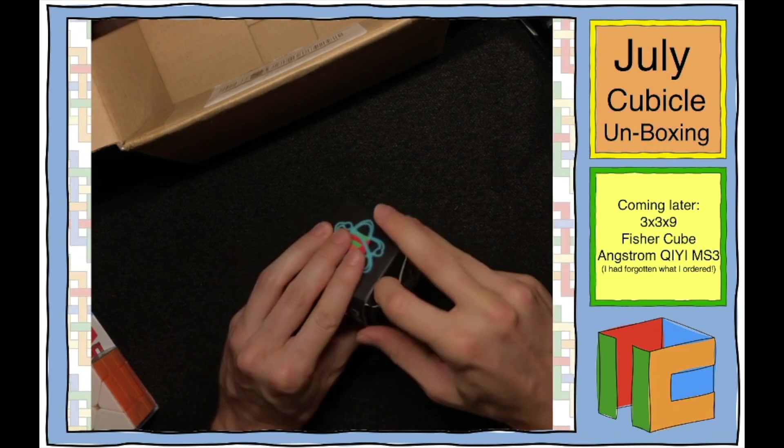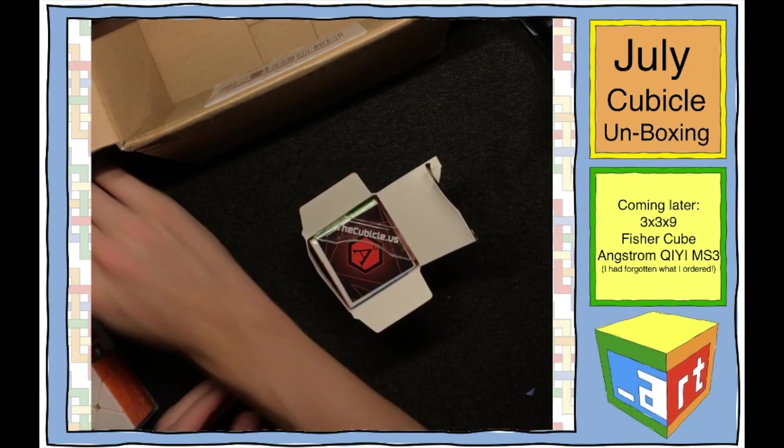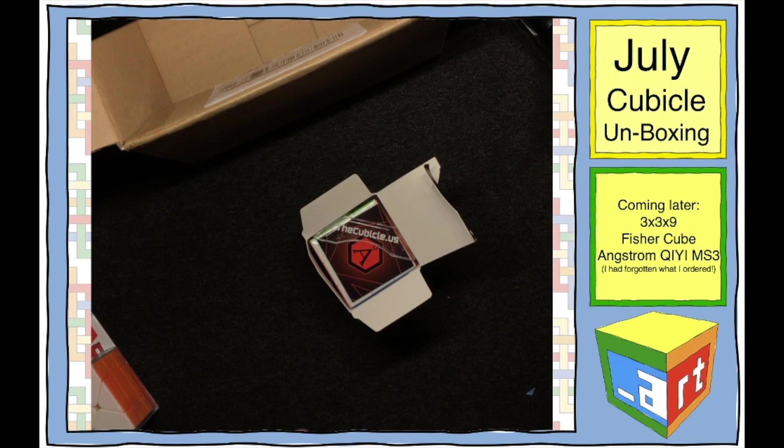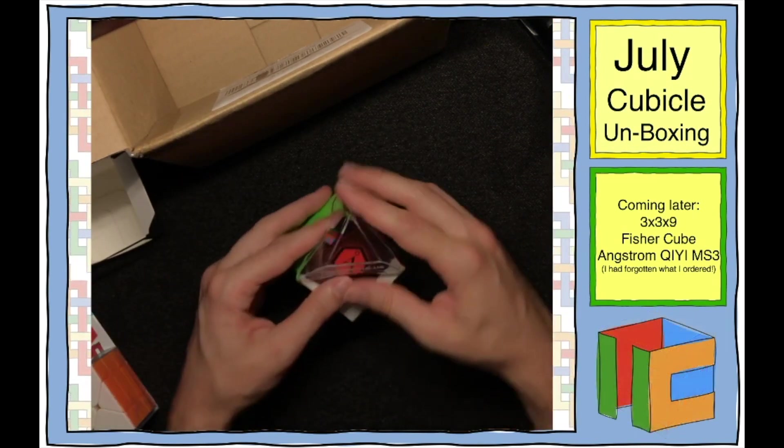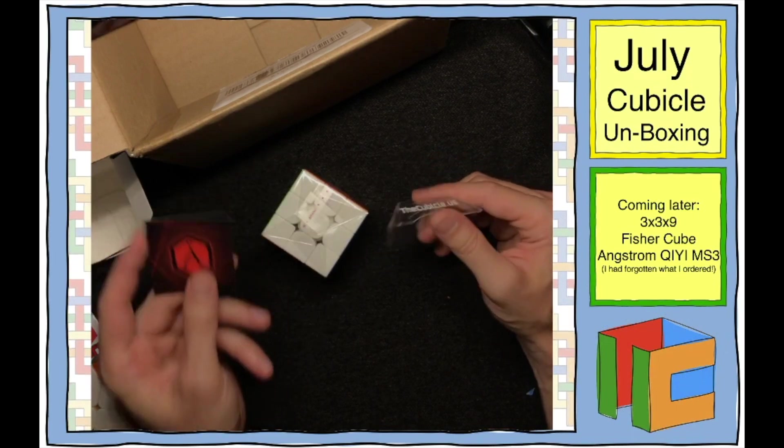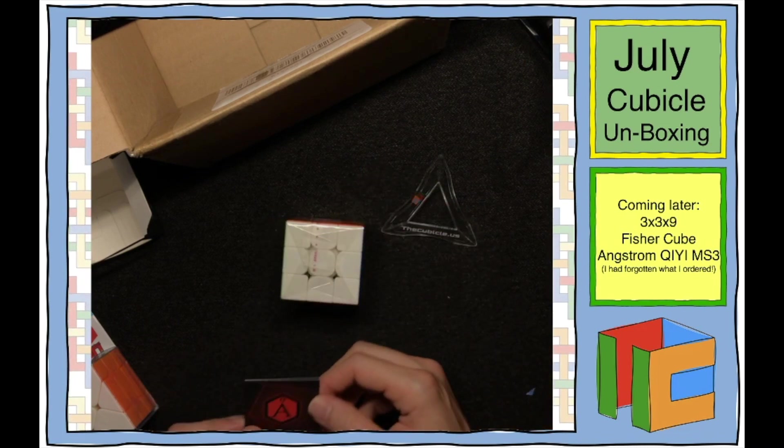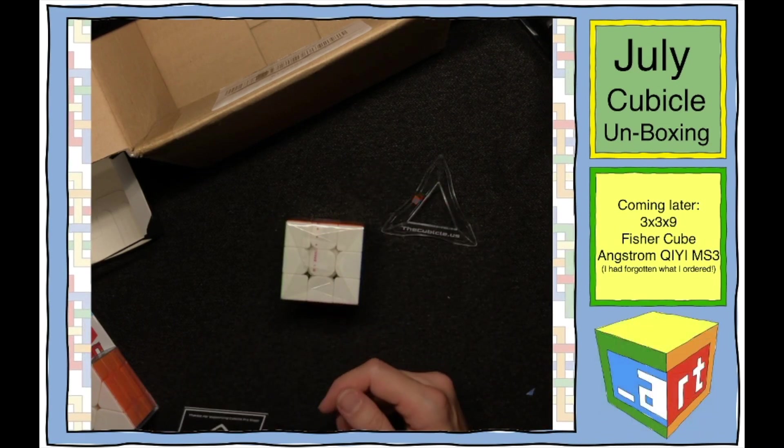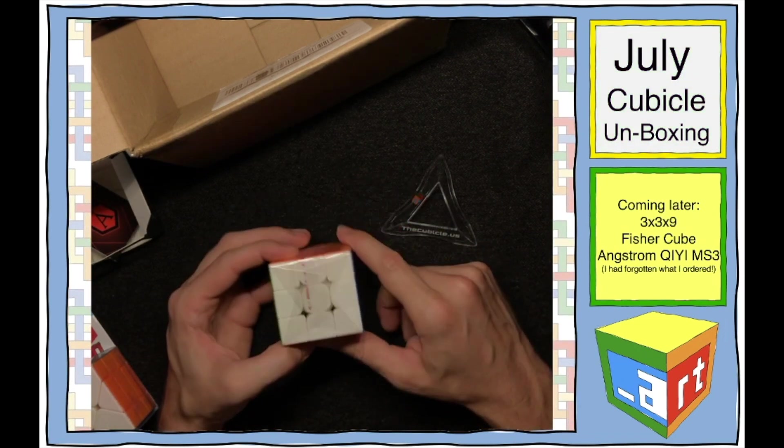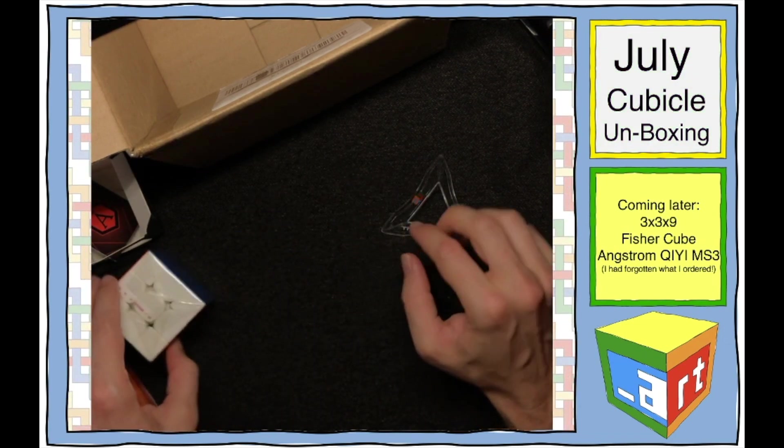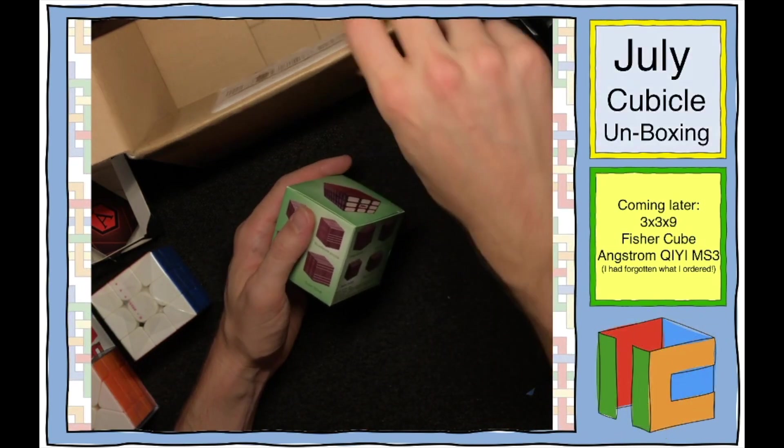It's an Angstrom MS 3x3. Wait a sec. I might have ordered this. Oh, yeah, I totally did. I thought I was like, oh wow, that's awesome. So this is the MS 3, but they've tricked it out with Angstrom. I guess that's why they gave me the lubricant guide. That's gonna be fun too. I'm gonna play with this tonight. But first, I wanna see this guy.